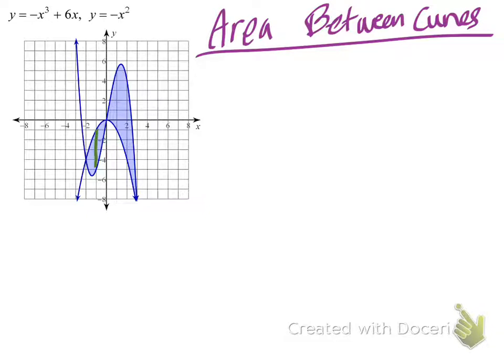In the second region, the cubic function is the larger of the two. These representative rectangles allow us to define the height of each infinitely thin rectangle that are summed together to give the exact area. There are really two problems in one: figuring out the areas of each region and adding them together.